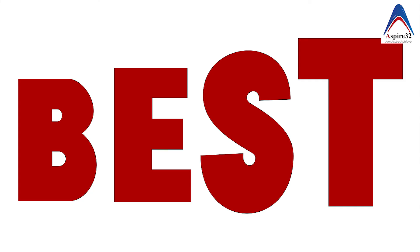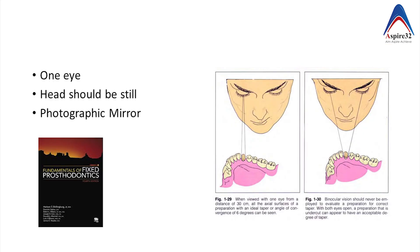The textbooks also say that you should always judge the angle of convergence and divergence by looking at the preparation from only one eye with a stable head, and you can use a photographic mirror instead of a mouth mirror to judge it better.